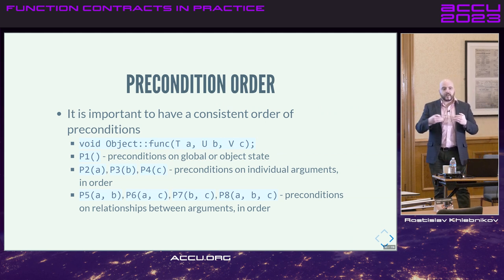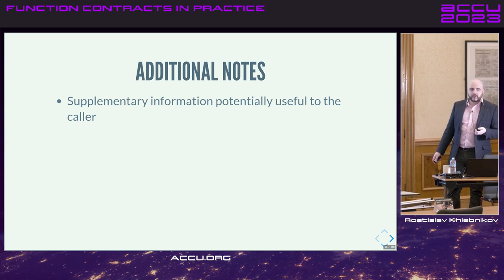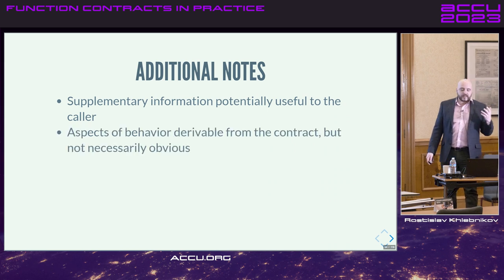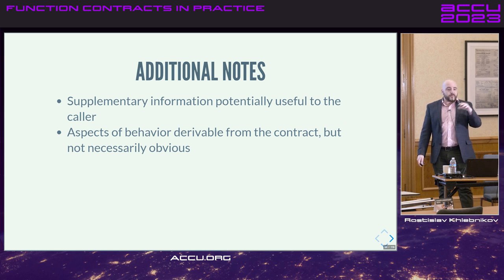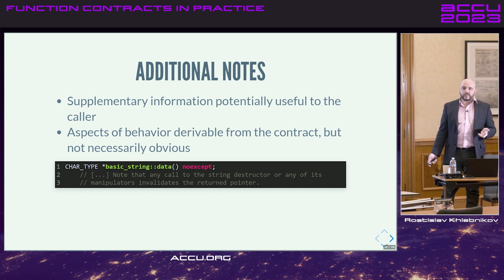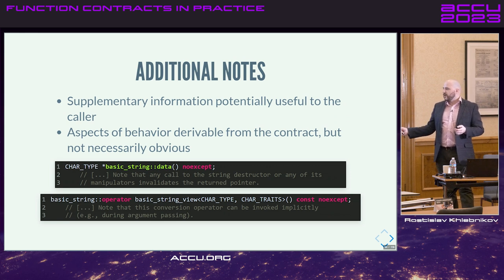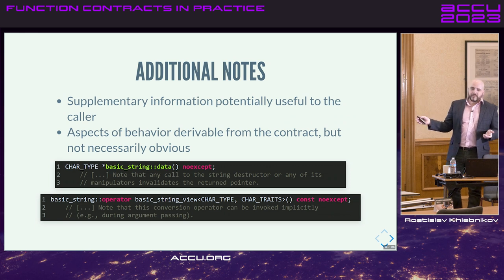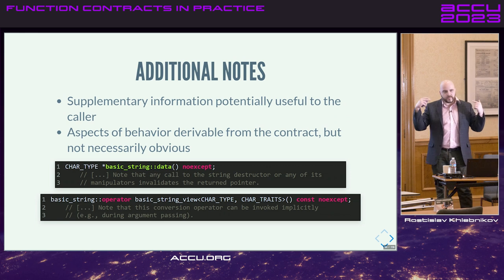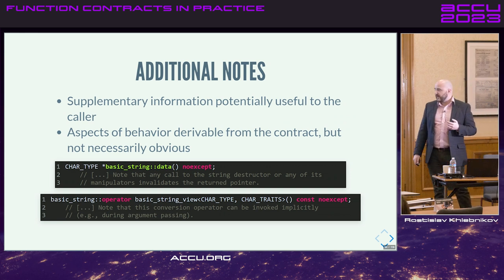For additional notes: supplementary information potentially useful to the client, typically aspects of behavior that can be derived from the contract but are not necessarily obvious. For example, for the data() function on a string: 'Note that any call to string destructor or any manipulator invalidates the returned pointer.' Similarly, for a conversion operator to basic_string_view: 'Note that this conversion operator can be invoked implicitly, for example during argument passing' — which highlights why it's implicit.